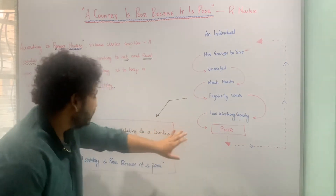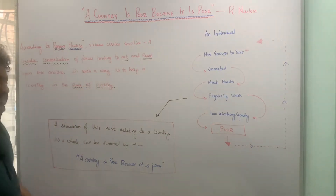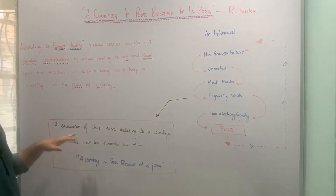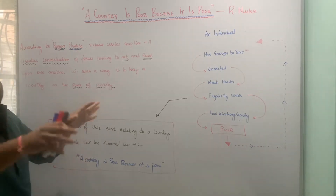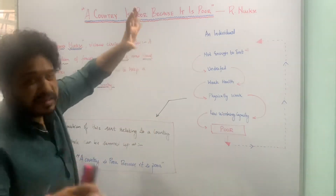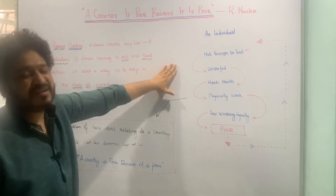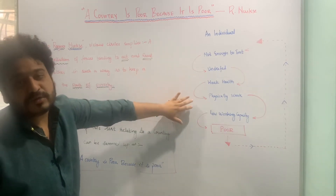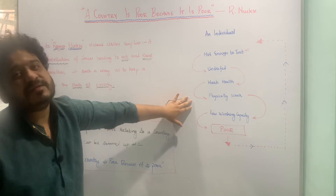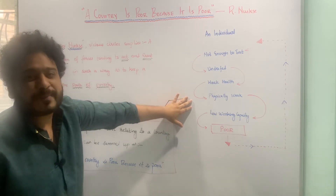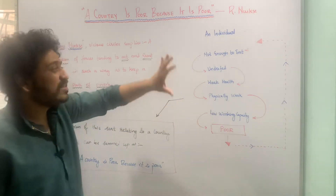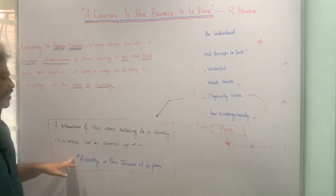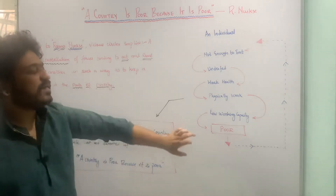Nurkse says that this situation, if it relates to a country and happens on a macro level — if you see that all the individuals are not fed enough, they do not have proper health, they cannot translate that into any working capacity — then they are poor. And when this happens at a macro level in an economy, you call that a country being poor because it is poor.